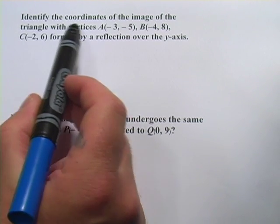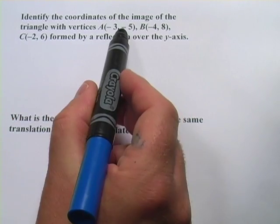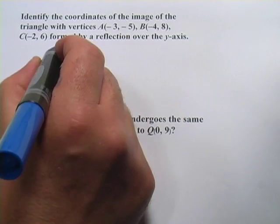The first one says, identify the coordinates of the image of the triangle with these vertices: A(-3, -5), B(-4, 8), and C(-2, 6), formed by a reflection over the y-axis.